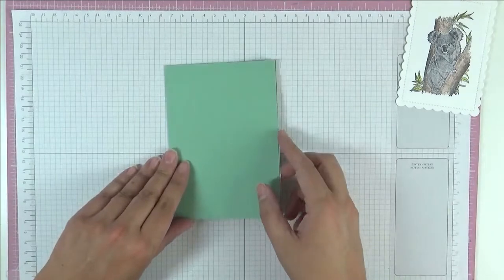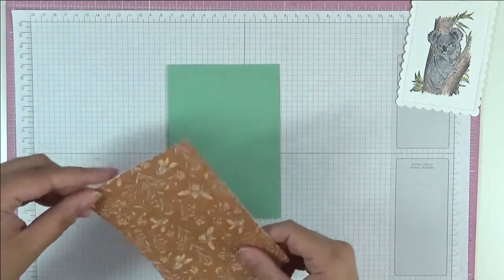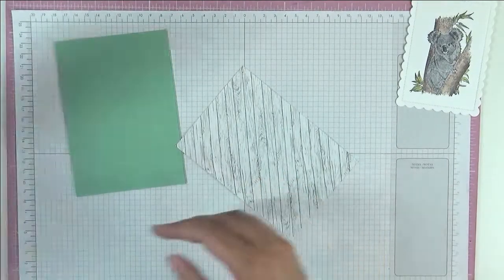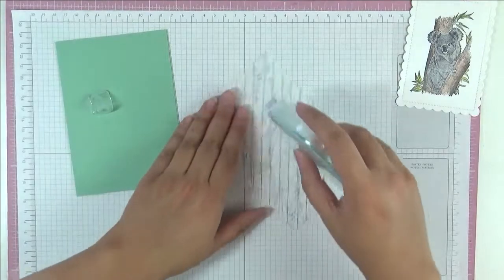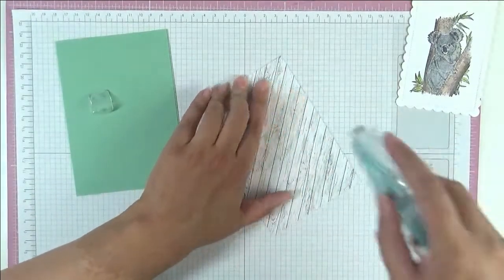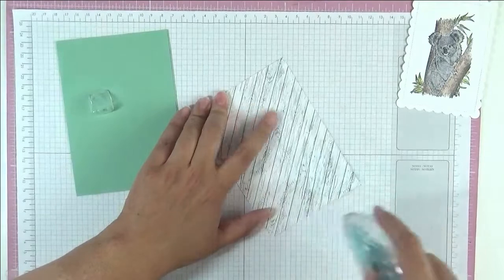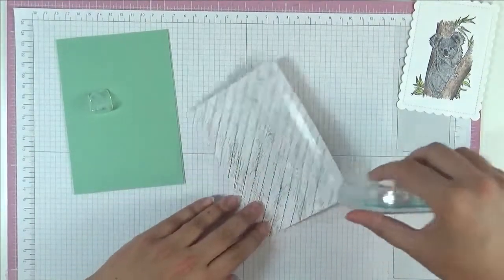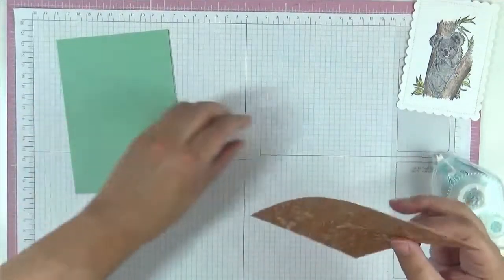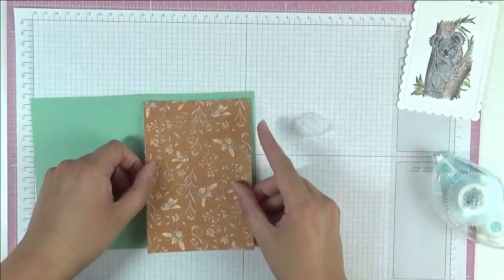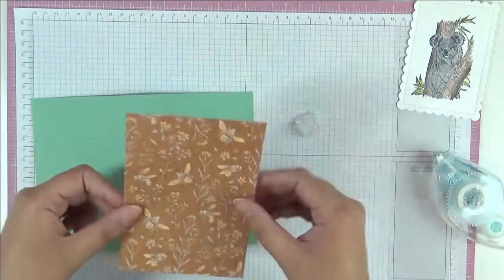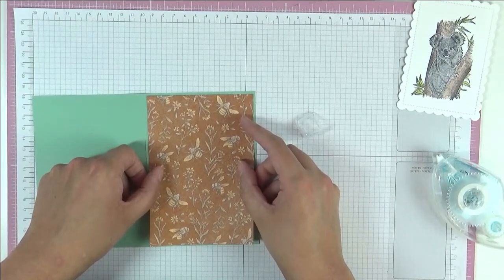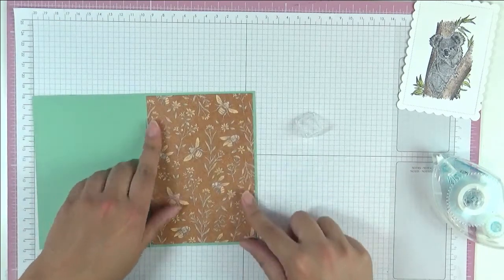My card base is Mint Macaron. And then I have a piece here of the Heart and Home Designer Series paper. And this measures 14.35 cm by 10. And we're just going to stick this down. This is just a standard card base, so that's an A4 sheet cut in half and then folded in half.